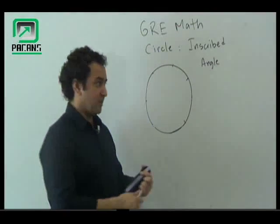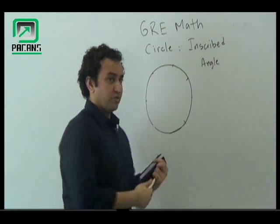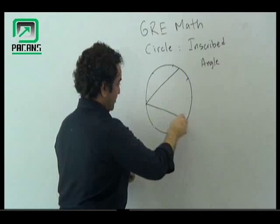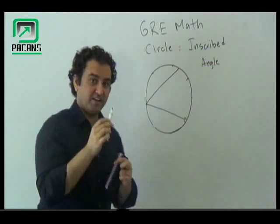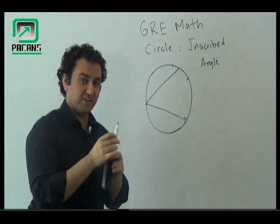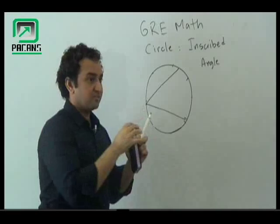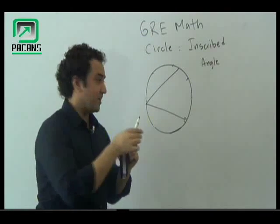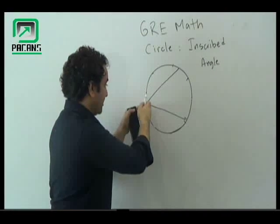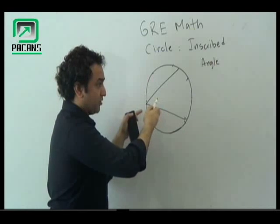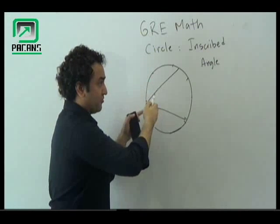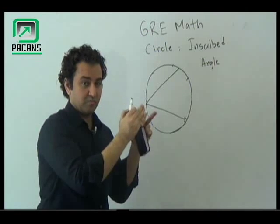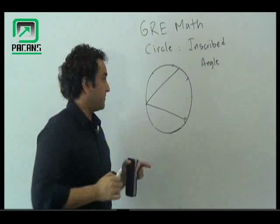An inscribed angle is the angle which is going to have this kind of a shape. The difference between a central angle and an inscribed angle is that the vertex is not going to be from the center. The angle is going to be formed from anywhere on the circle, but not from the central angle. Okay?